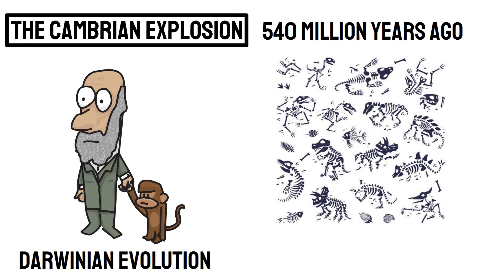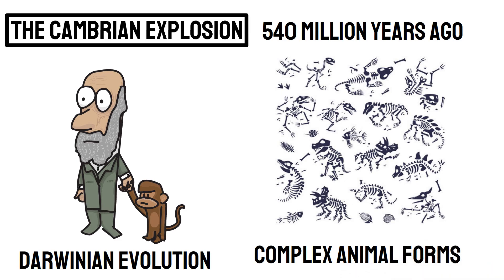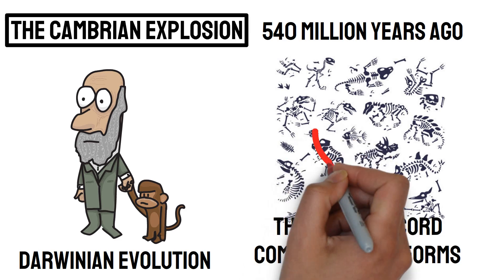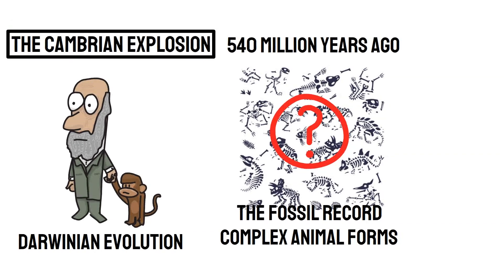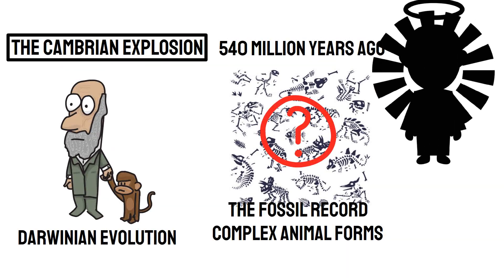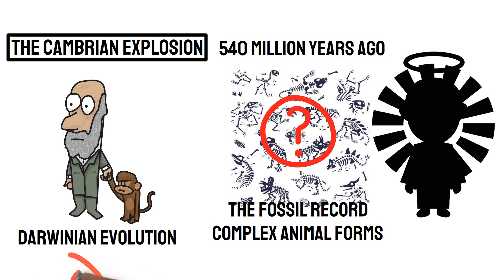Over 500 million years ago, a vast array of complex animal forms appeared suddenly in the fossil record with no clear evolutionary predecessors. This rapid appearance of life is more consistent with an intelligent designer than with the gradual Darwinian evolution.